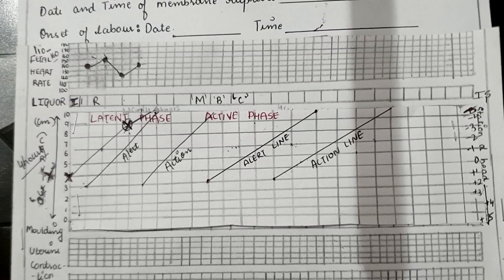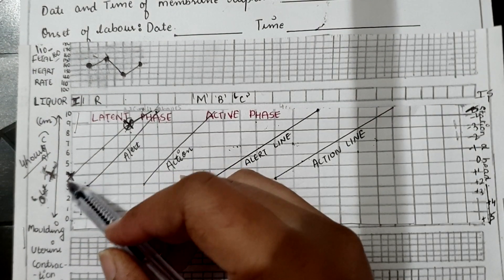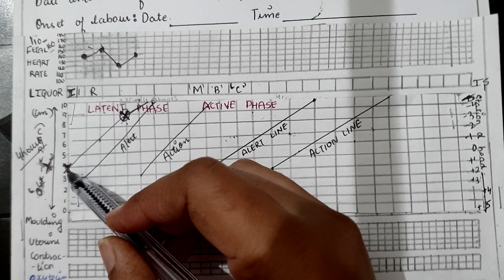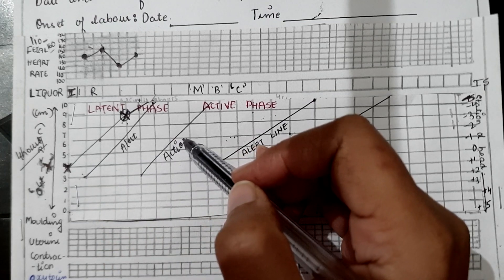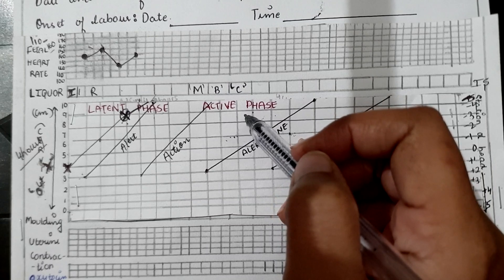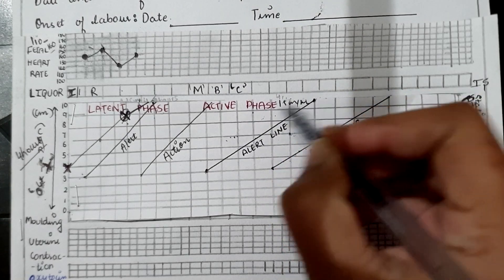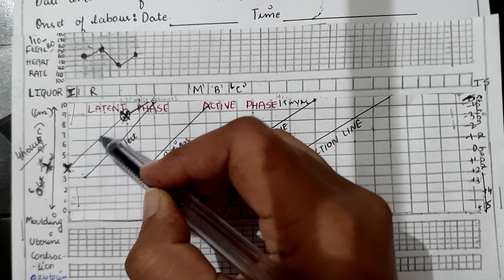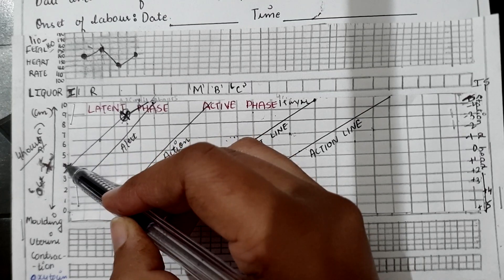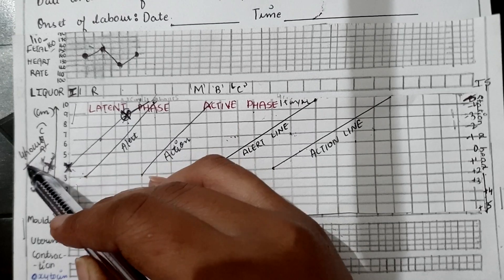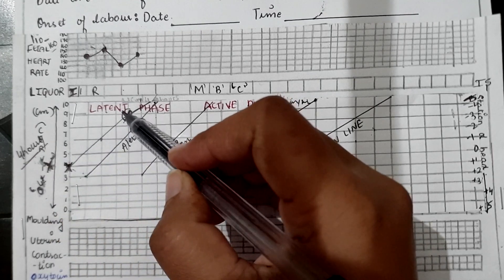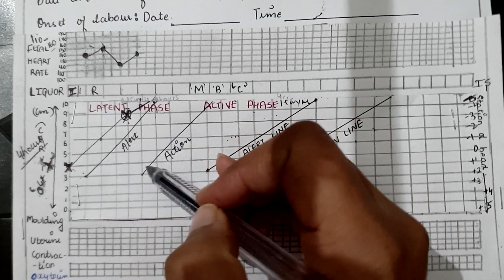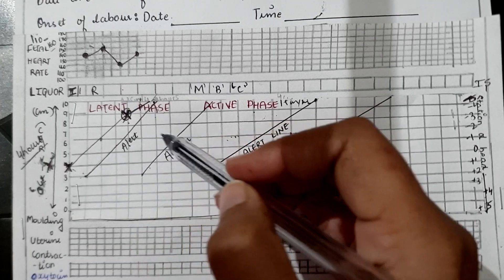For example, suppose a multiparous woman — third time pregnant — is admitted to the labor ward with 4 cm cervical dilatation, meaning she is already in the active phase. The rate of cervical dilatation in a multiparous woman in active phase is on average 1.5 cm per hour. The time of admission is considered zero hour. Cervical dilatation is checked every four hours and plotted with X. The two lines are roughly drawn to check whether the progress of labor is normal.